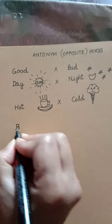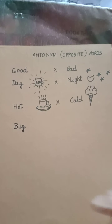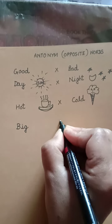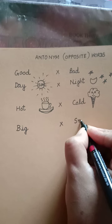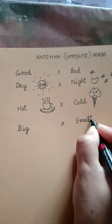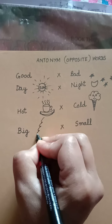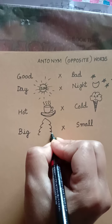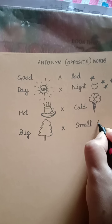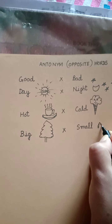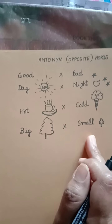Next word is B-I-G, big. Big means bada. The opposite of bada will be chota. So, small. The opposite of big is small. See, this is a big tree over here. And here we have a small tree. So, big means bada and small means chota.